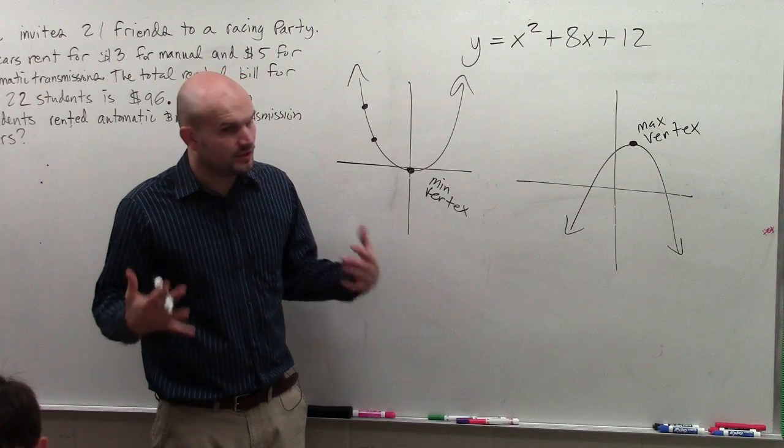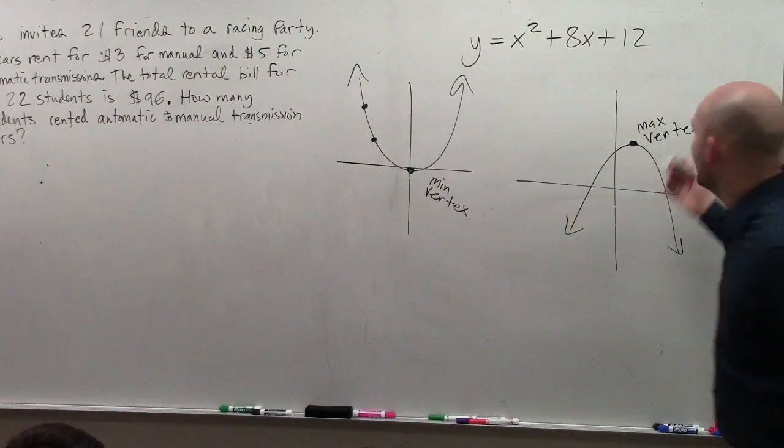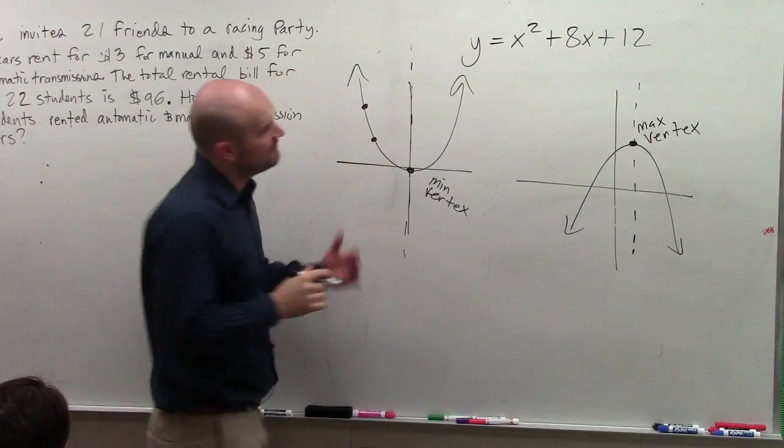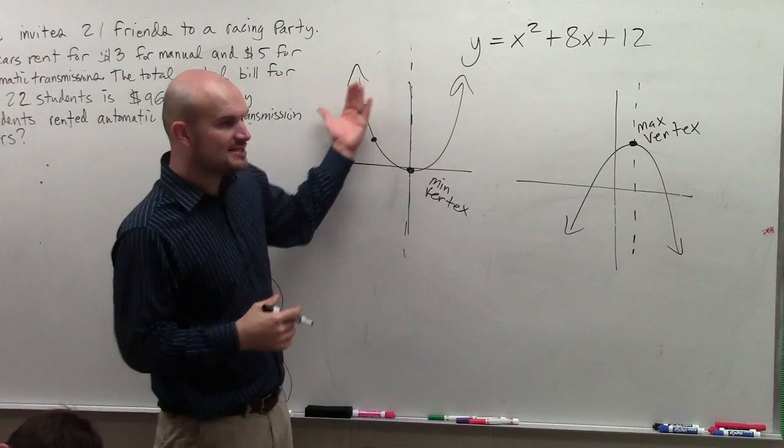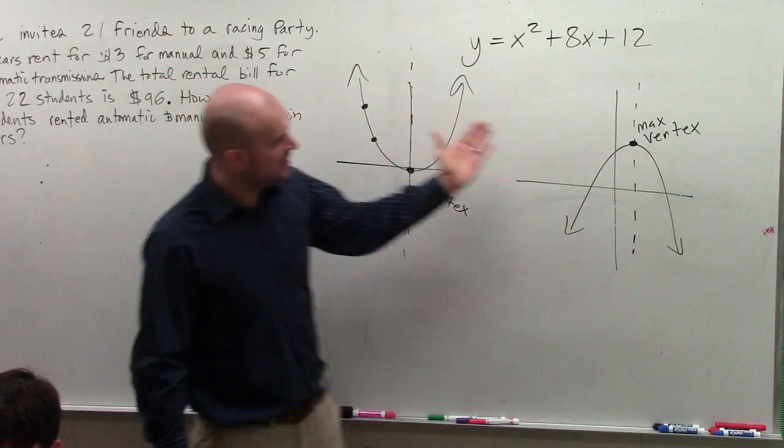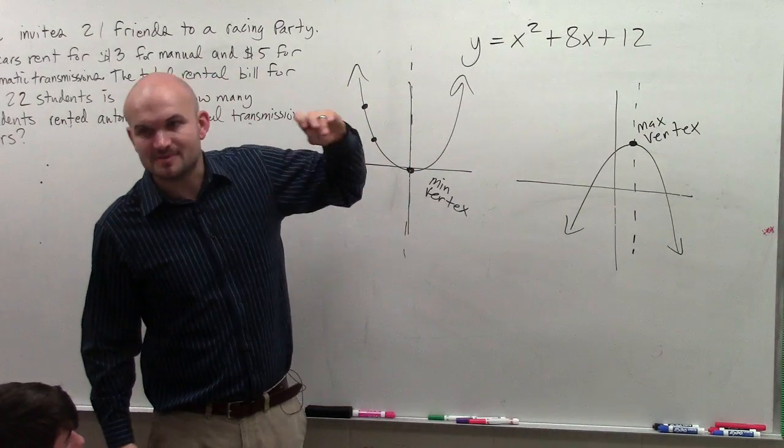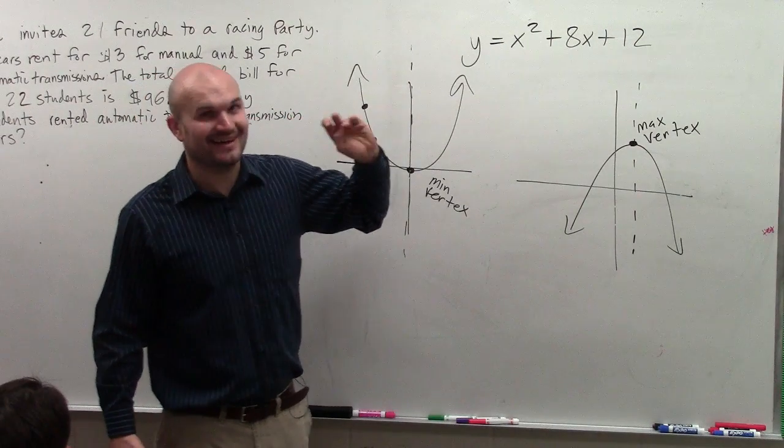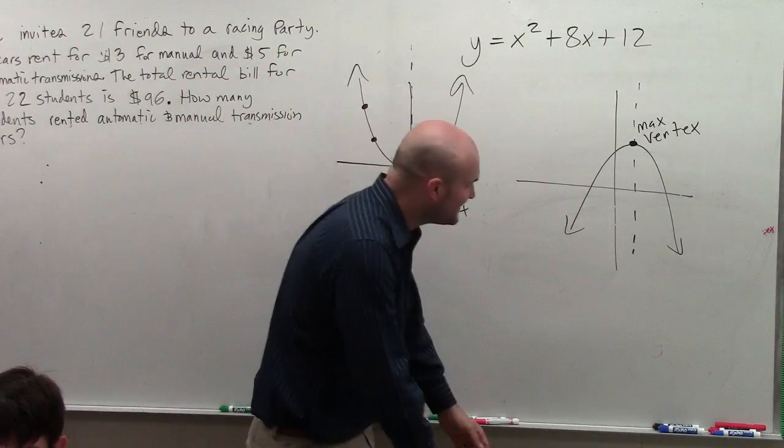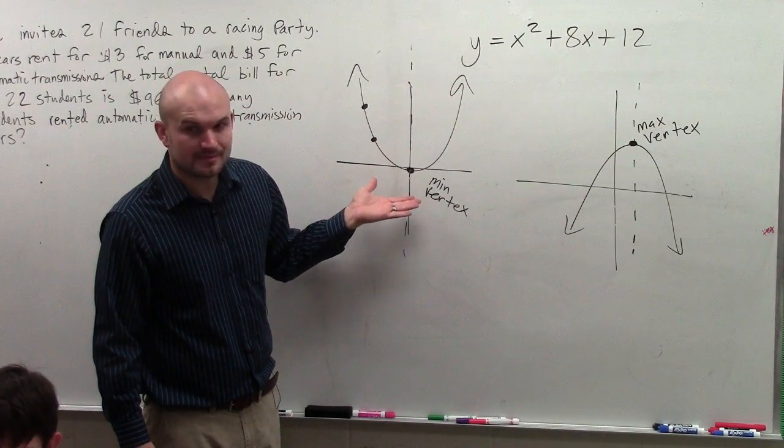So, you're going to want to make sure you understand that. The next thing is through the vertex, there is a line of symmetry. I'm not going to be the best drawer here, but if you guys remember in geometry, a line of symmetry is a line about which you can flip your graph over and it's going to be symmetrical. Do you guys see that? If you were to kind of take that and fold it over that dotted line?